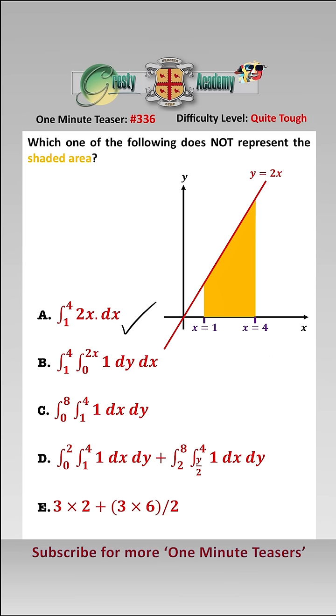B is the double integral doing Y first, and therefore we would enter at Y equals 0 and exit at Y equals 2X, and then we would go from X equals 1 to 4, so that one is correct.